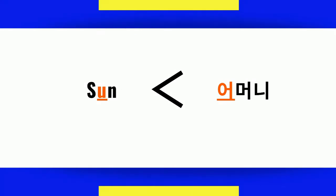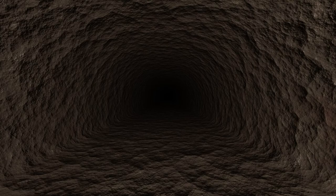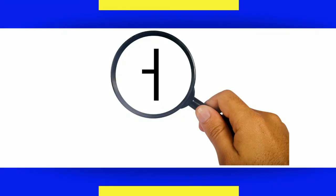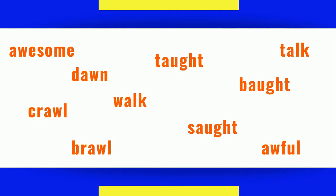When you compare the ㅓ sound in the word 'sun' with the Korean word '어머니,' these sounds are not the same. You will notice that the Korean ㅓ is formed farther back, very close to the throat. Let's think about some of the sounds that are similar to the Korean ㅓ sound: awesome, dawn, walk, sought, bought, talk, brawl, or awful. These are much closer to the Korean ㅓ than other sounds.